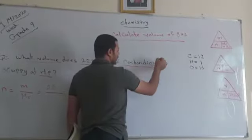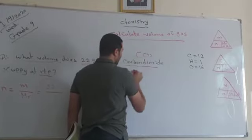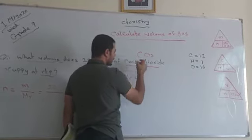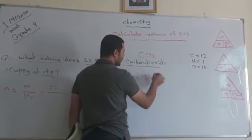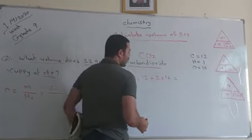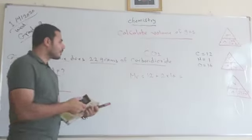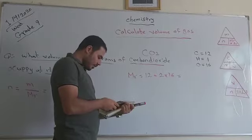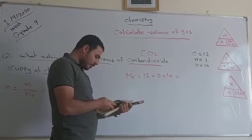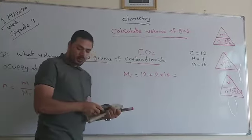Carbon dioxide is CO2. So MR equals C equals 12 plus oxygen 2 times 16. It will be 2 times 16 plus 12 equals 44.